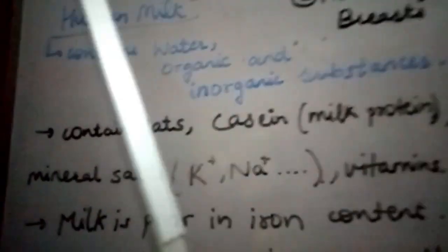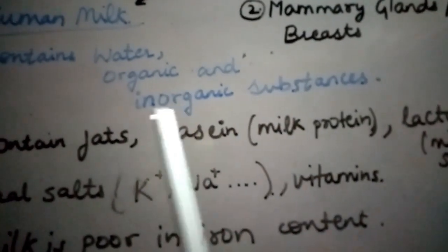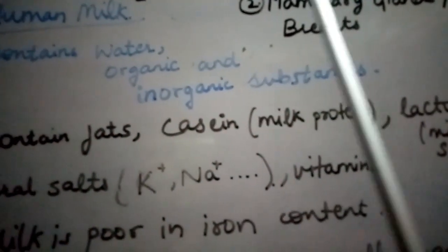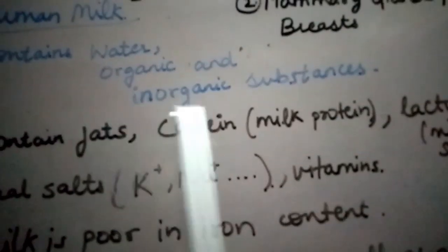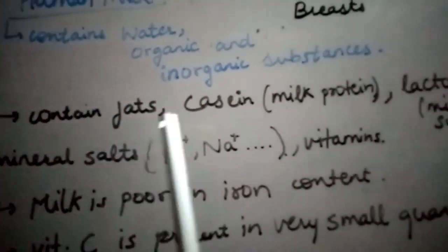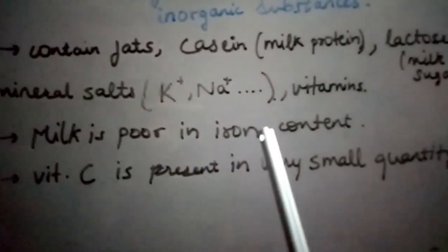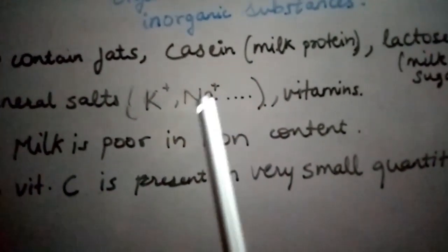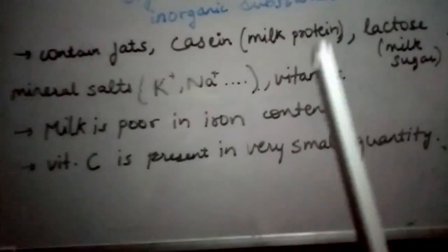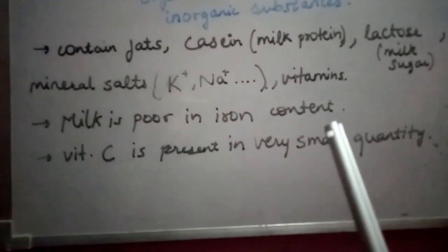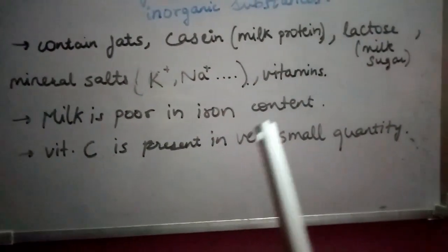Human milk contains water, and organic and inorganic substances. Its main ingredients include fats, casein (a milk protein), lactose (a milk sugar), and mineral salts such as potassium, phosphorus, and sodium ions, as well as vitamins. However, milk is poor in iron content, and vitamin C is also present in very small quantities.